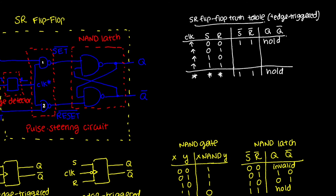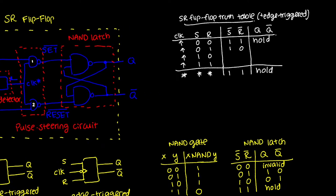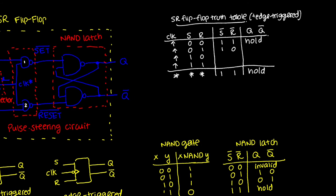When S is zero and R is one: one input to NAND gate one is zero, so S-bar outputs high. Both inputs to NAND gate two are high, so R-bar outputs zero. R-bar being zero is the reset condition for the NAND latch, meaning Q is zero and Q bar is one.